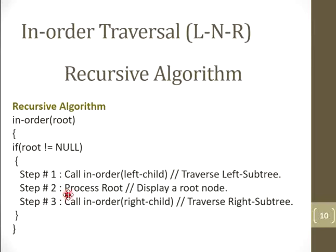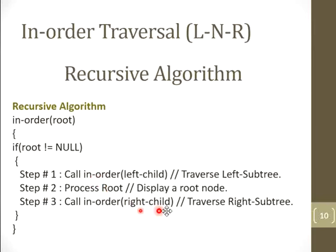You must know the concept of recursive algorithms before this video, because it is a very important concept — you must know how a recursive function executes and how it makes different copies of variables. After traversing left, the next step is to process the root node — meaning displaying the root node. After processing, we move to the next step: recursively calling the inorder function by passing the right child. It will again go to the same function, making the right child the new root node, and checking whether the current root is not equal to null.